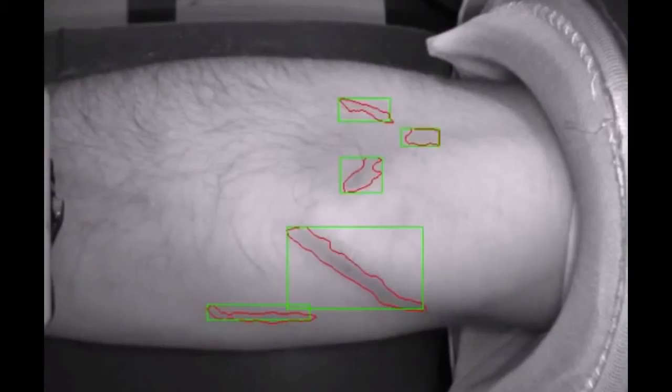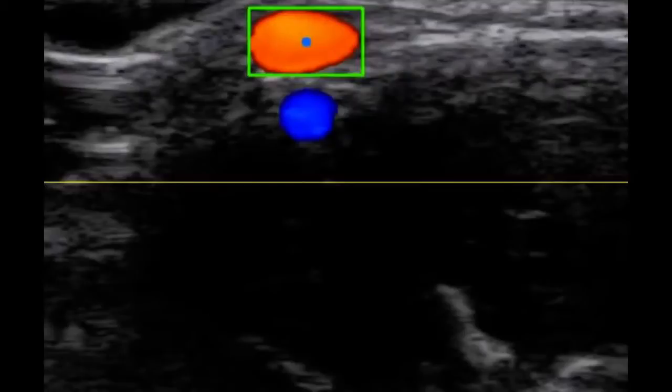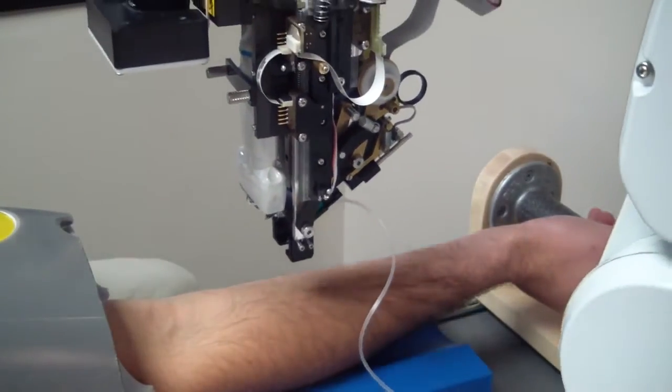It uses infrared light and image analysis to find the right vein, ultrasound to confirm the blood flow in the vein, and robotics to insert a needle into it.